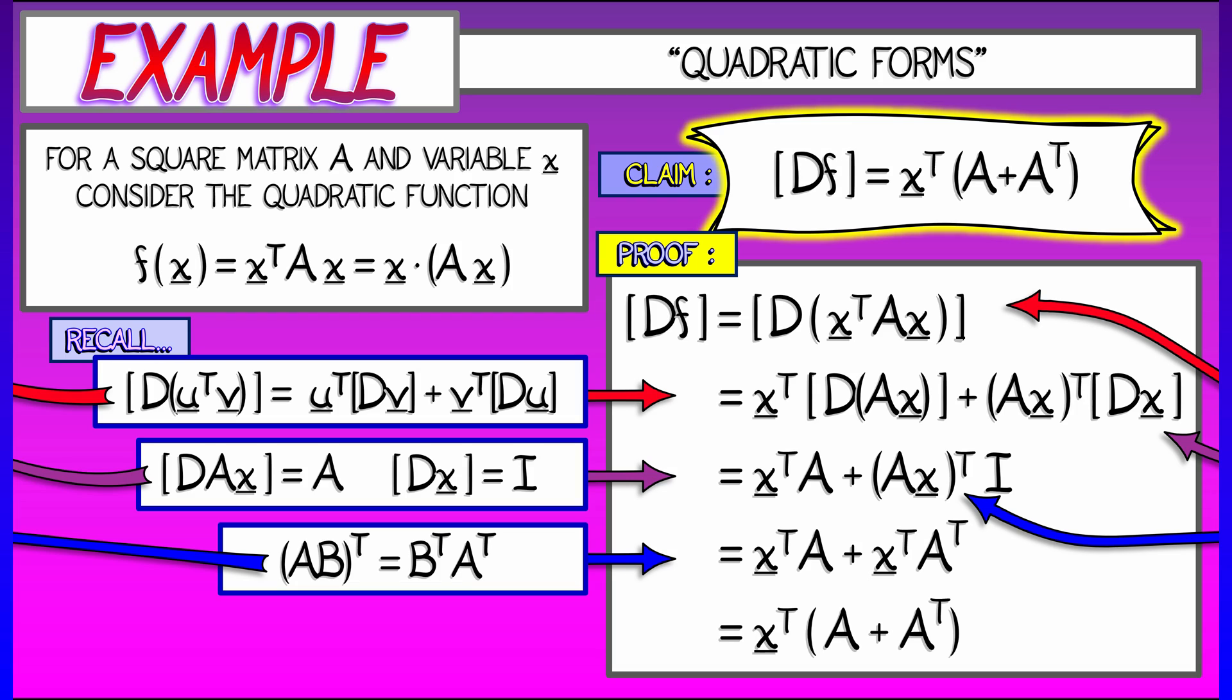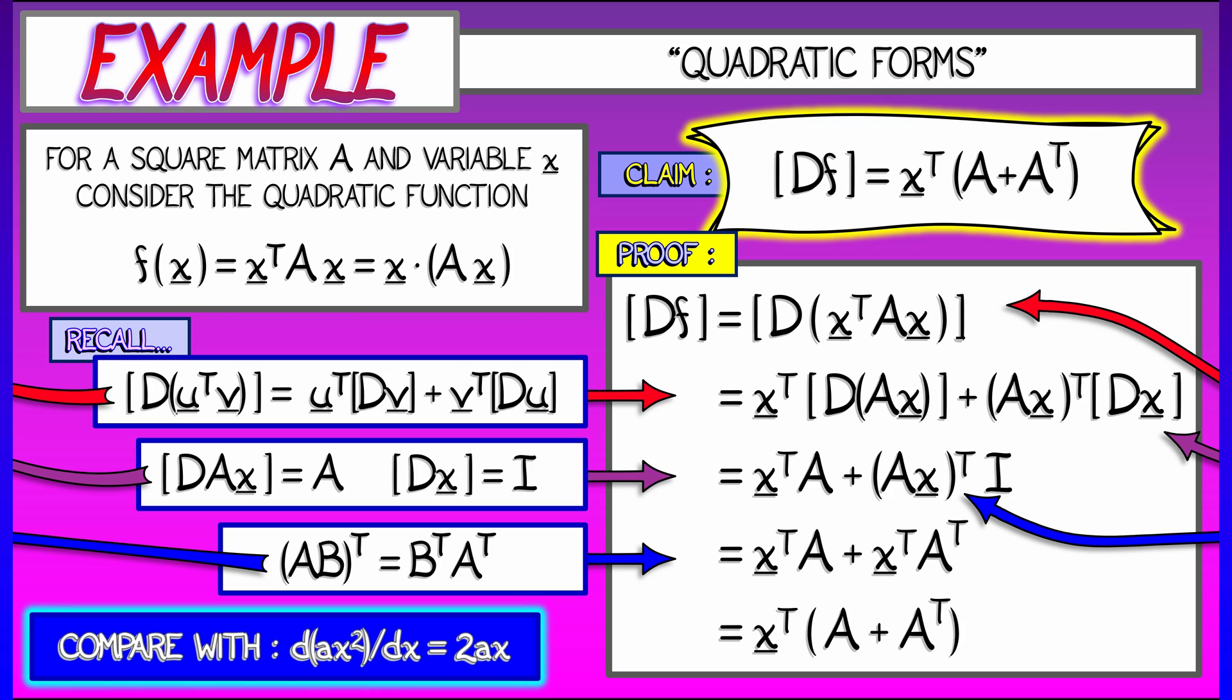Now is that weird? No, that's not weird at all. If you consider the single variable version of this, what's the derivative of A times x squared? Well, of course, it's 2A times x.